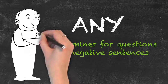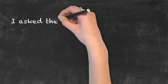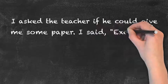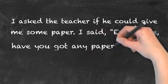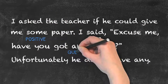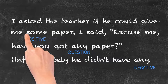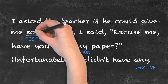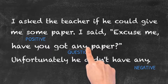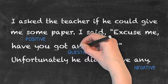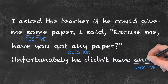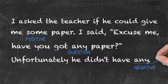For example: I asked the teacher if he could give me some paper. I said, excuse me, have you got any paper? Unfortunately, he didn't have any. In the first sentence, we use some because it is a positive statement. In the second sentence, we use any because it is a question. Finally, we use any again because it is a negative statement.